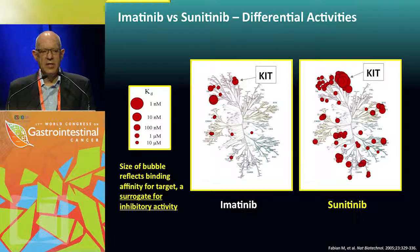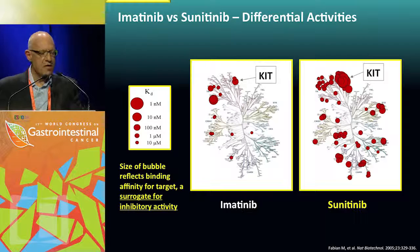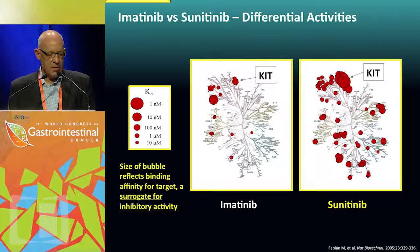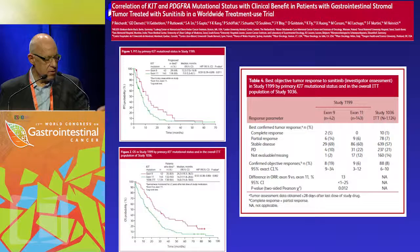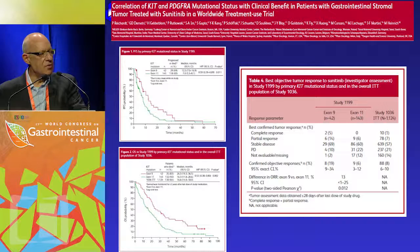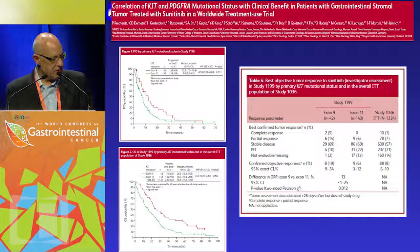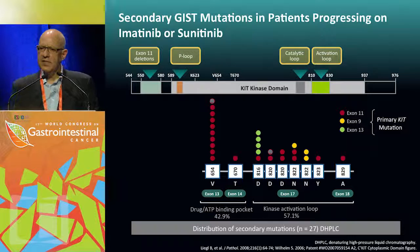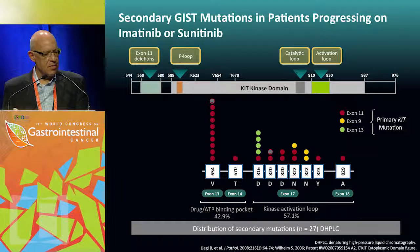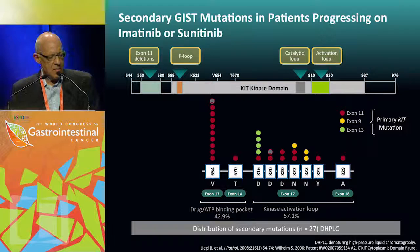Looking at other drugs useful in this disease: the kinome maps show imatinib and sunitinib are different molecules. Sunitinib data show that patients with an exon 9 mutation do better with sunitinib than patients with an exon 11 mutation, both in terms of overall survival, progression-free survival, and response rate. When you look for secondary mutations — mostly in a research setting — these occur commonly within tumours and between tumours within the same patient, making this a complicated setting that requires drugs inhibiting these other targets.